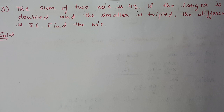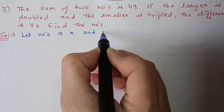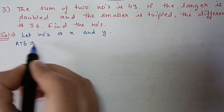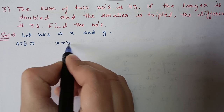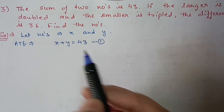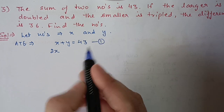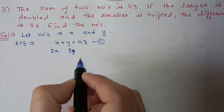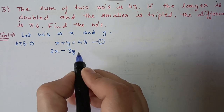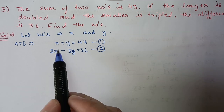Question 3: the sum of two numbers is 43. If the larger number is doubled and the smaller number is tripled, their difference is 36 — find the numbers. Let the numbers be x and y. Equation 1: x + y = 43. Taking x as the larger number, equation 2: 2x − 3y = 36.